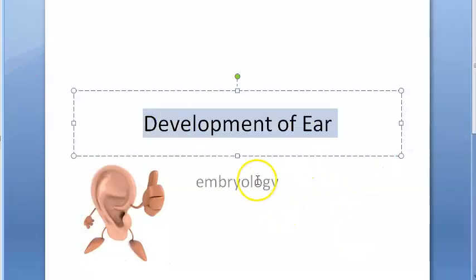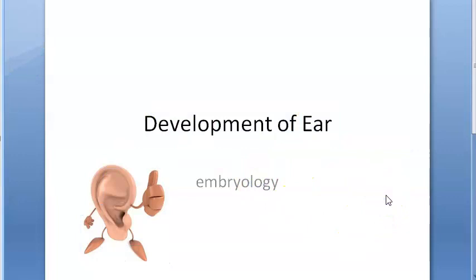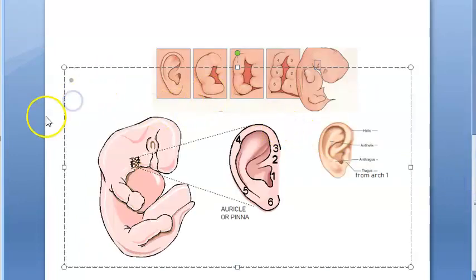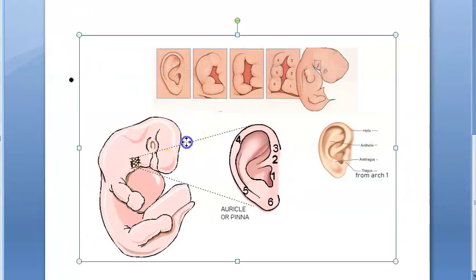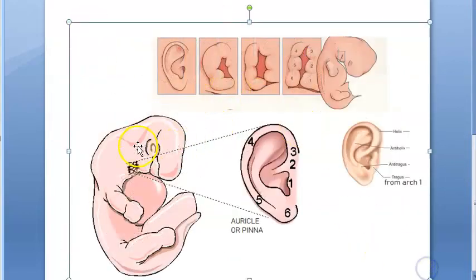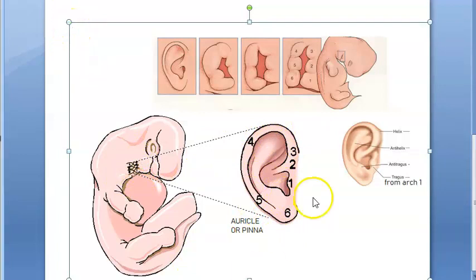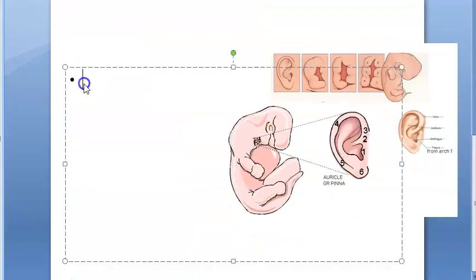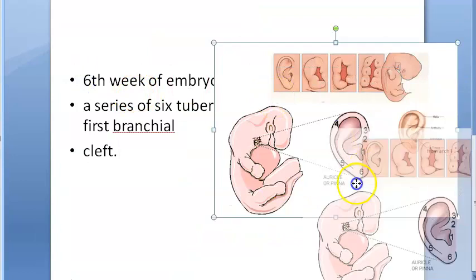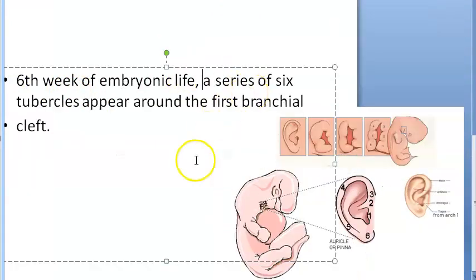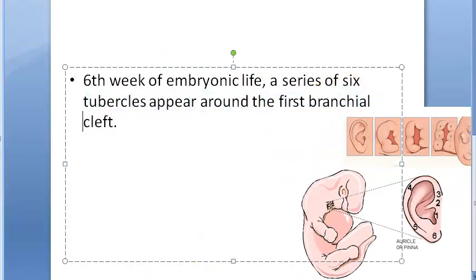Hello, in this video let us quickly look at the development of the ear - embryology. First, we'll start with how the auricle or the pinna develops. Here you can see the fetus, and something here is becoming the auricle or pinna. In the sixth week of embryonic life, a series of six tubercles appear around the first branchial cleft.